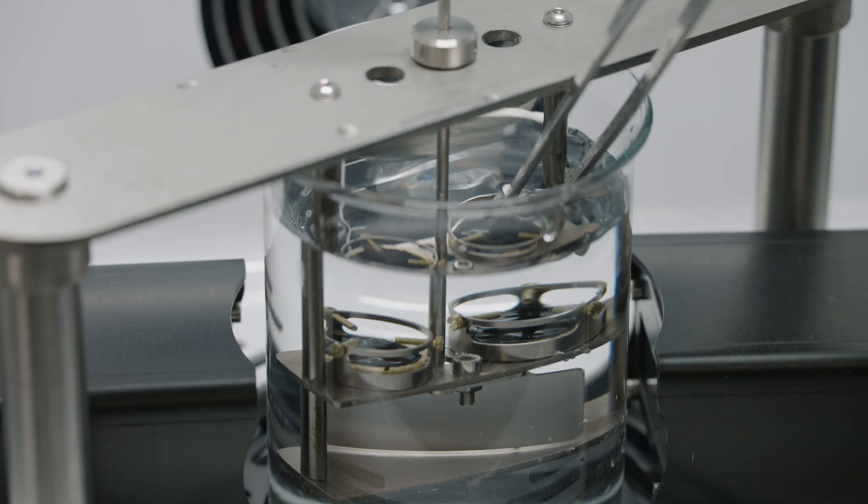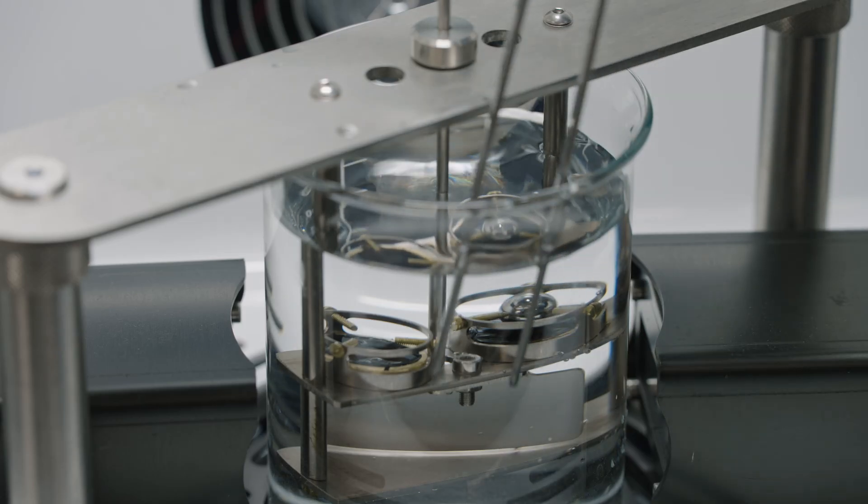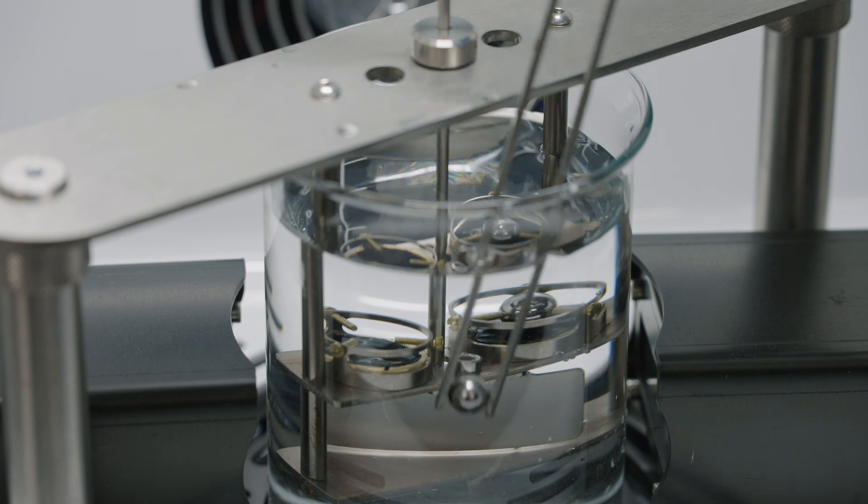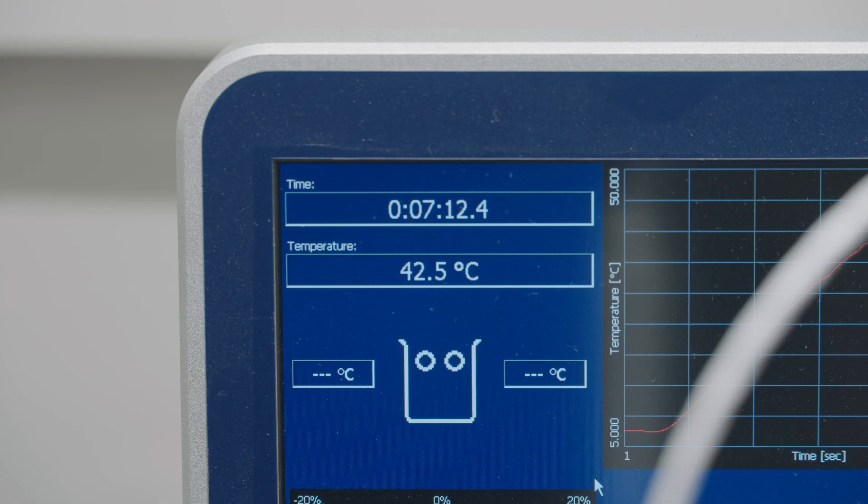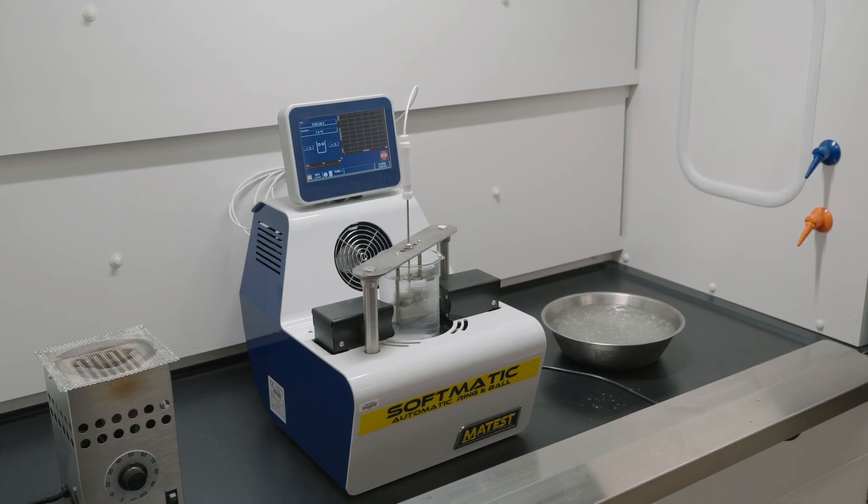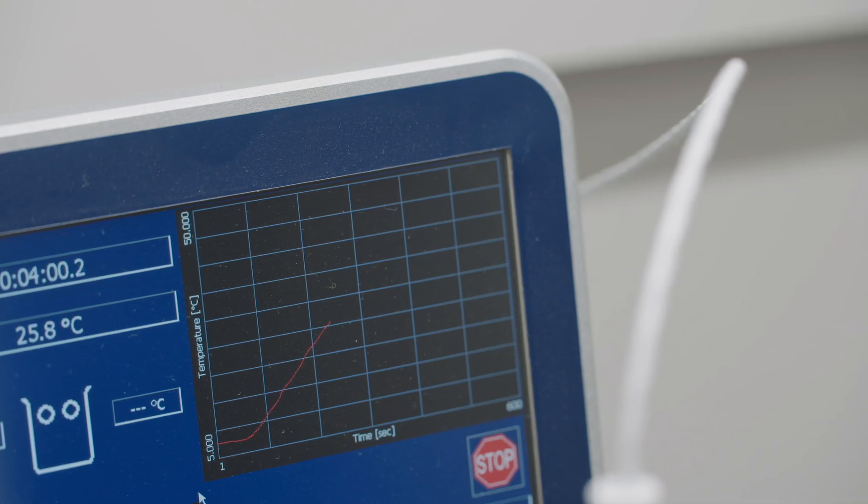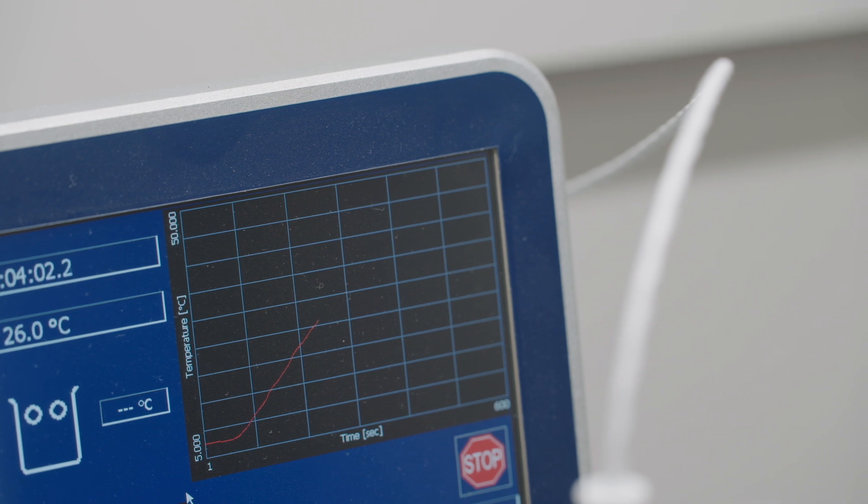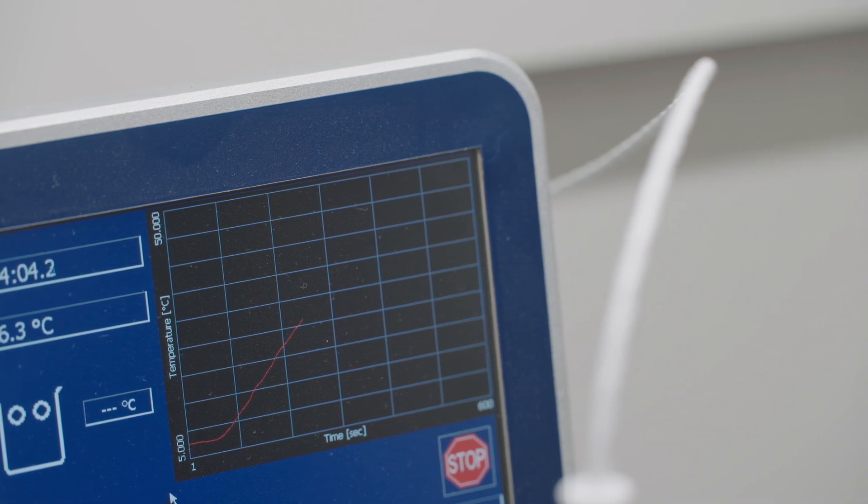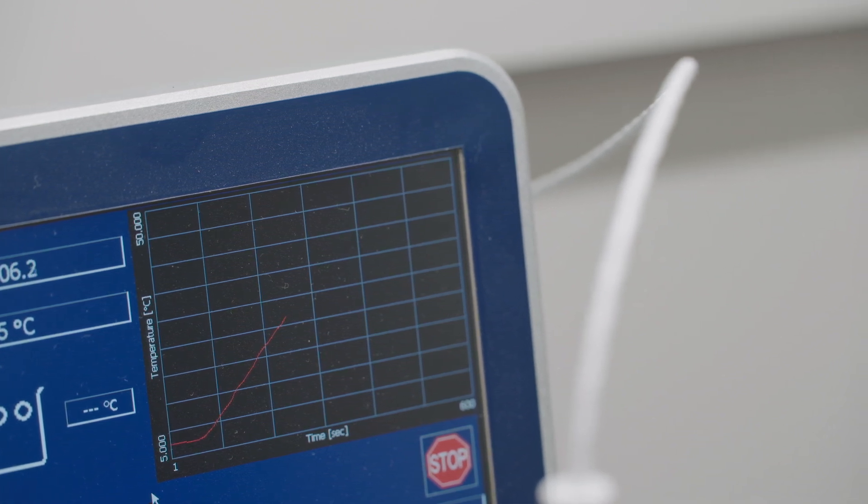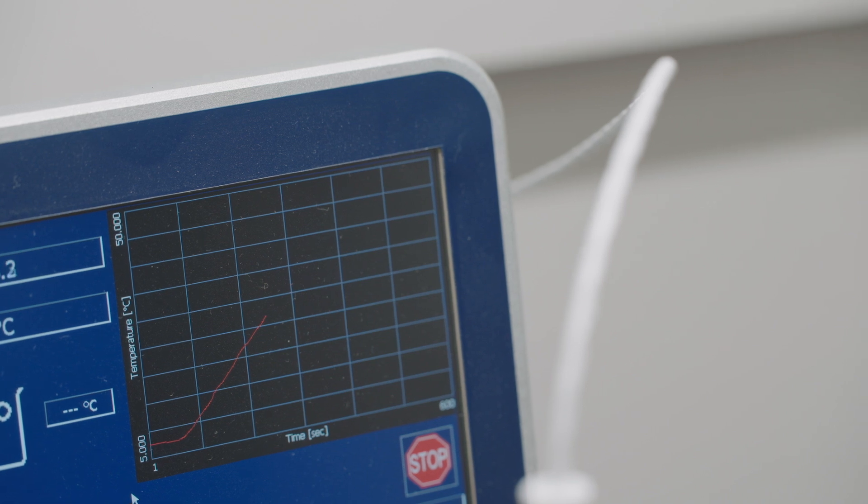Use forceps to place a ball from the bottom of the bath into each of the ball centering guides. Heat the bath at the rate specified in the test method. Use a shield if needed to protect the bath from drafts. Do not average the test temperature rise during the course of the test. Discard test results in which the temperature rise falls outside the limit specified in the test method.